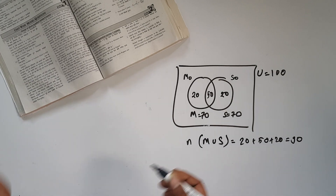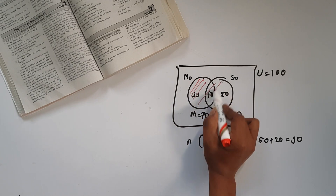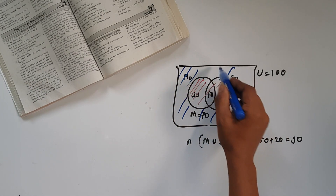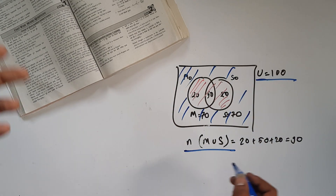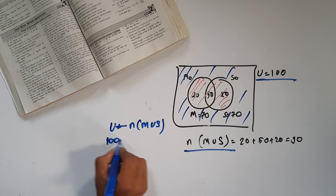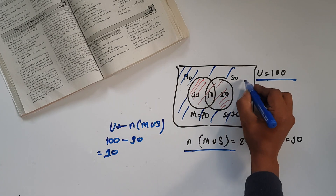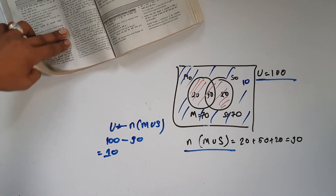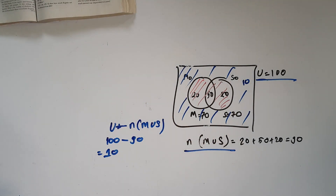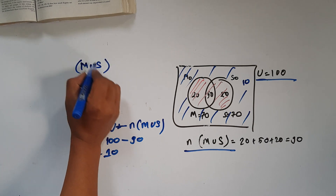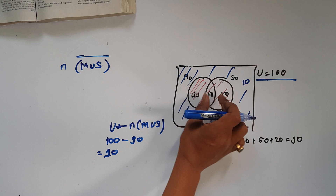Find the number of students who failed in both subjects. Students who failed in both means U minus the union of math and science. That is 100 minus 90, which equals 10. So 10 students failed in both subjects. This is the complement of math union science — the number of students in the complement of math union science equals 10.